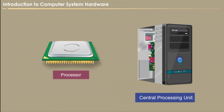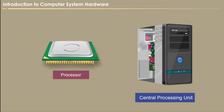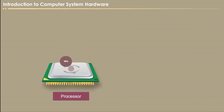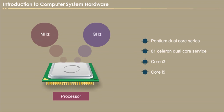Processor. The processor is the main component of a computer. The processor is based on factors such as speed, performance, reliability and motherboard support. Clock speed is measured in units of cycles per second, which is called hertz. Computer boards and CPUs run at the rate of millions and billions of hertz — megahertz and gigahertz. Pentium dual core series, Celeron dual core series, Core i3, i5, and i7 series are some of the processors.